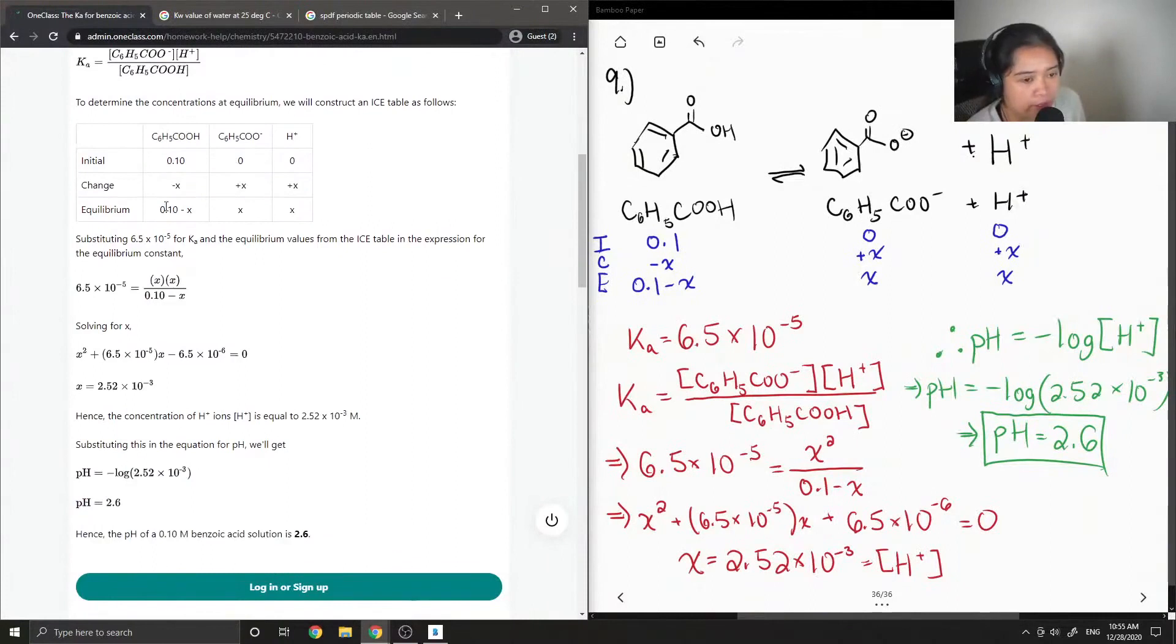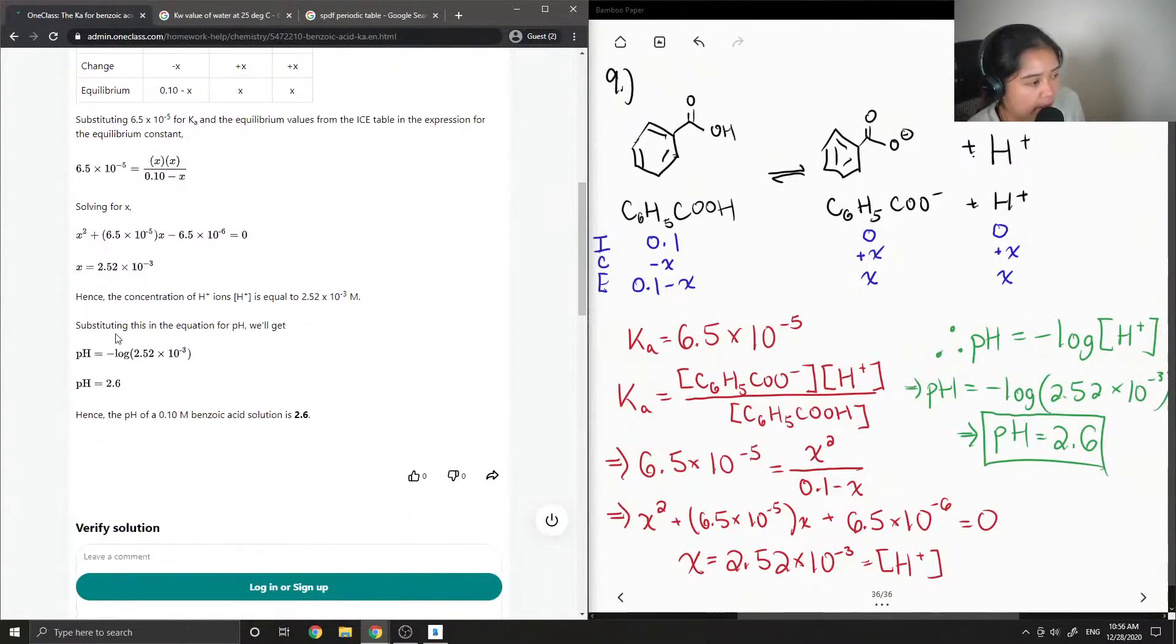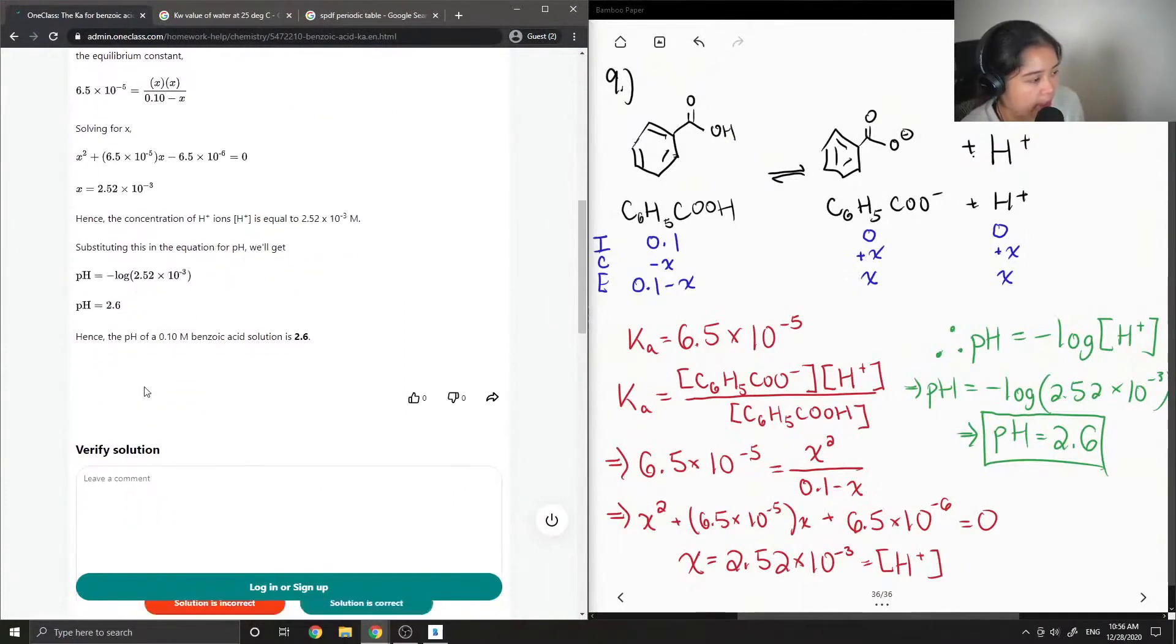To determine the concentrations at equilibrium, we will construct an ICE table as follows. Okay, so they show their ICE table, the initial, the change, and the equilibrium. Substituting 6.5 times 10 to the negative 5 for Ka and the equilibrium values from the ICE table, they got the following. And then they have their quadratic formula and ended up with X is equal to 2.52 times 10 to the negative 3, which is equal to the concentration of our H plus ions. Substituting this into the equation for pH, we get 2.6.